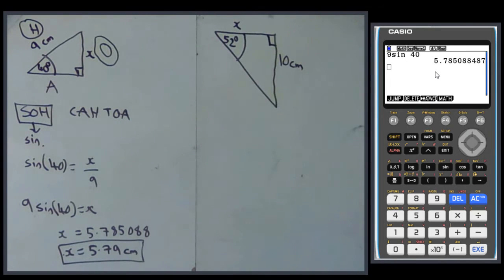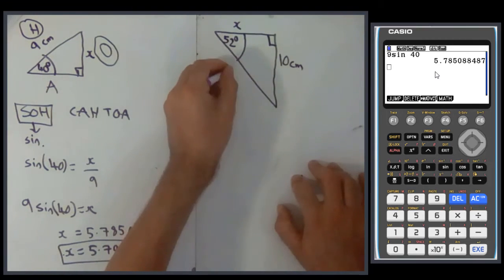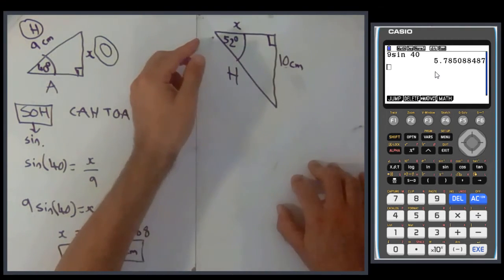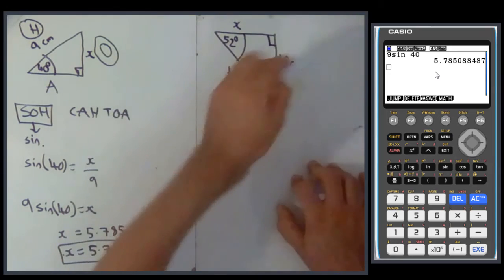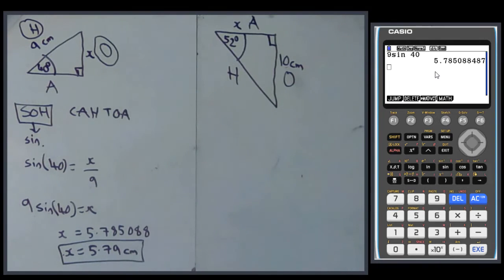Okay, so you look at that. The question would say, find the side marked x. And then we start in the same way, label HOA. Longest side, opposite the right angle, H. Opposite the angle in the question of 52, that's the O, and A is the other one.